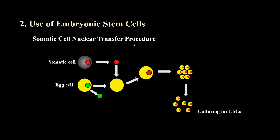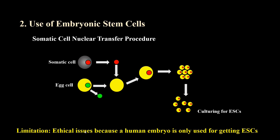To overcome this problem, scientists use a more advanced approach called somatic cell nuclear transfer (SCNT). In this procedure, scientists first remove the nucleus of an unfertilized egg, then insert the nucleus of a patient's cell into that egg cell. The egg cells are then allowed to develop to early embryonic stages, from which embryonic stem cells are obtained and cultured to produce specific cell types needed for therapy. However, there is a serious ethical issue, since this procedure involves using a human embryo solely to obtain embryonic stem cells. It is also very expensive and technically sensitive.